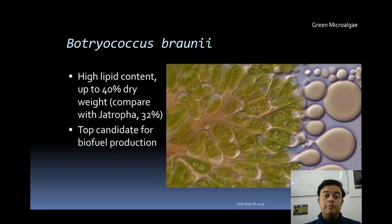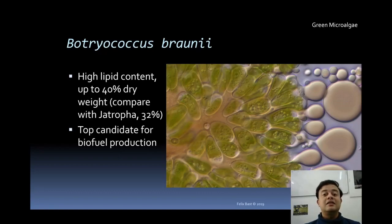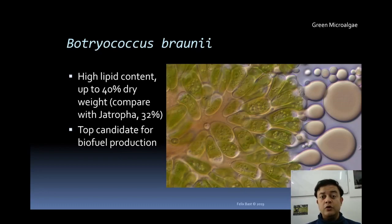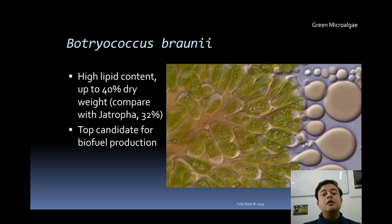Algae are also important as a source of biofuels. Botryococcus braunii is a green microalga with very high lipid content — 40% of dry weight — compared to the oilseed plant Jatropha, which has only 32% lipid by dry weight. Botryococcus braunii can be cultivated in photobioreactors — illuminated bioreactors made of glass — and is a top candidate for biofuel production.